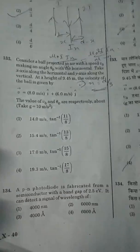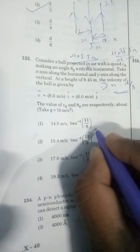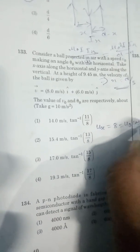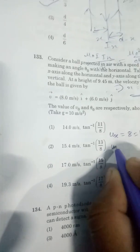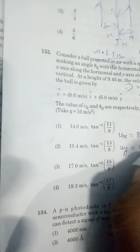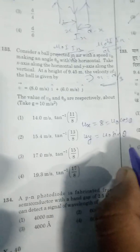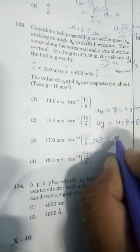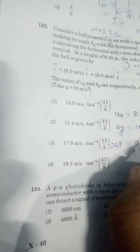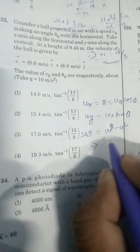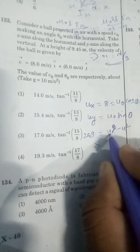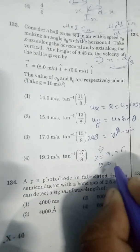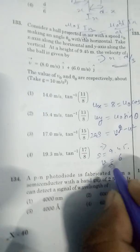In question number 133, the horizontal velocity is constant, so u_x is always 8, that is u_0 cos theta. And u_y is u_0 sin theta. First we find u_0 sin theta at height 9.45 by applying the equation v² = u² + 2as. We find v at this point. At s equal to 9.45, v is given along y-axis, that is 6. On solving we get u_0 sin theta value equal to 15.